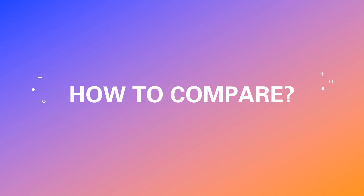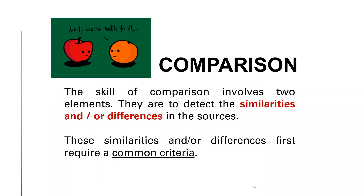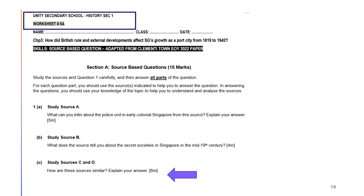Now in the next session, we will look at comparison. What is comparison? It is actually a skill to detect similarities or differences and look at two sources to see if there is something in common. We are going to focus specifically on things that are similar. For example, an apple and an orange — how are they similar? They are similar because they are both fruits.